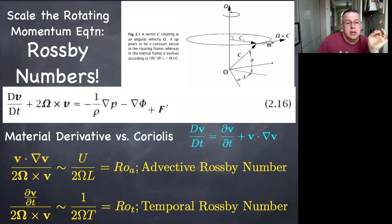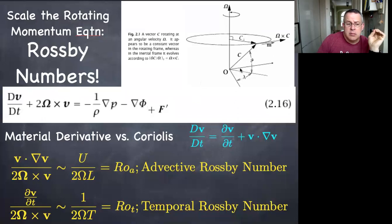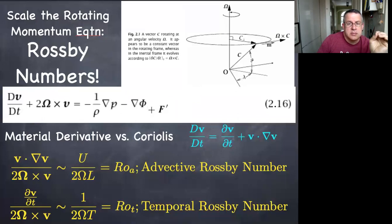That's it for this one. Rossby numbers are important. Whether or not you've followed all the vector calculus details, the key point is that we can write the equations with just a small tweak to add the Coriolis force and centrifugal force — that explains the difference between the rotating-frame and inertial-frame equations of motion.